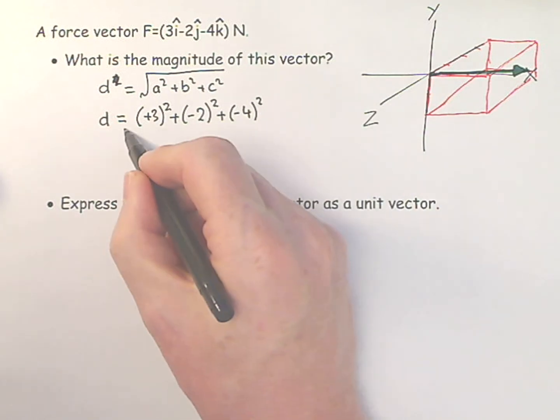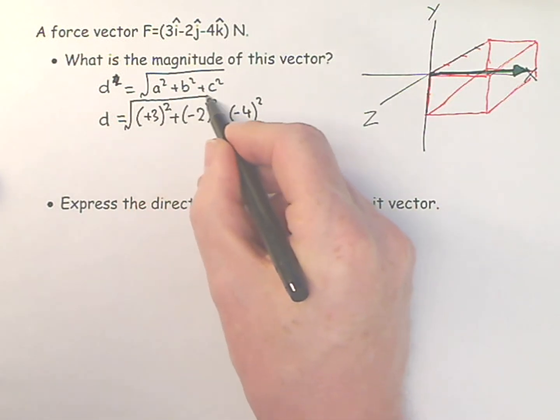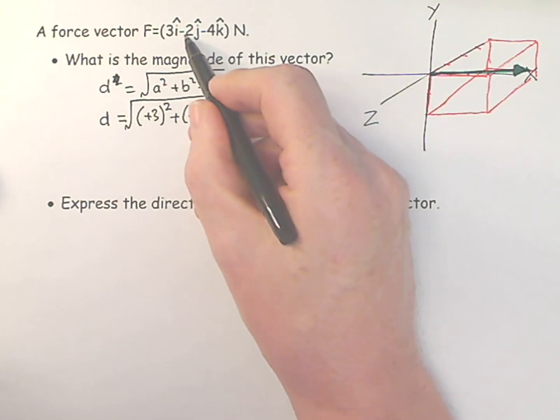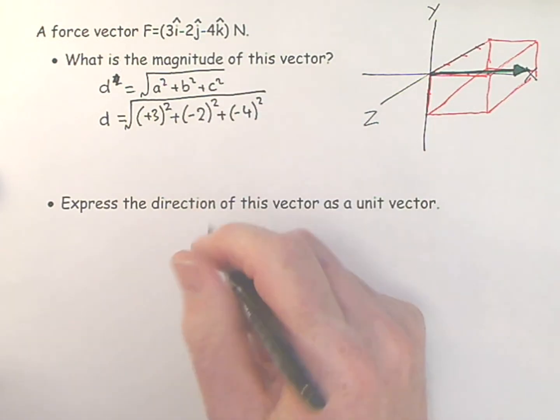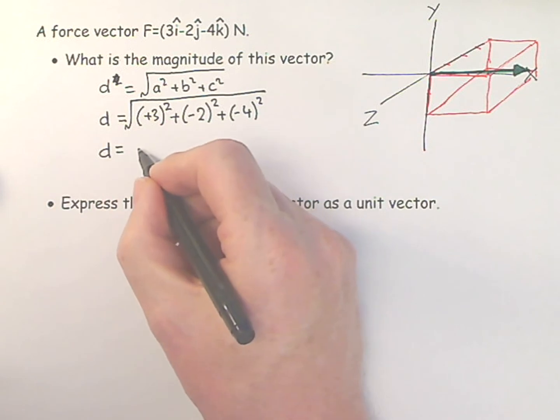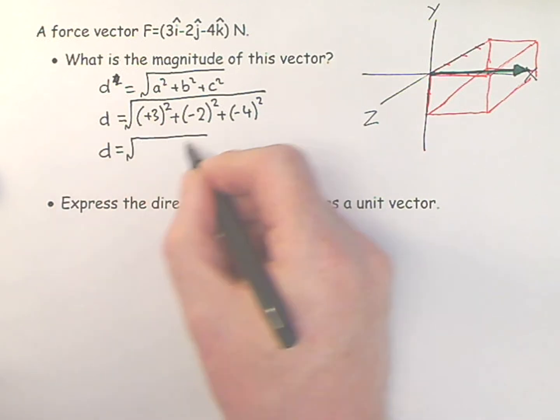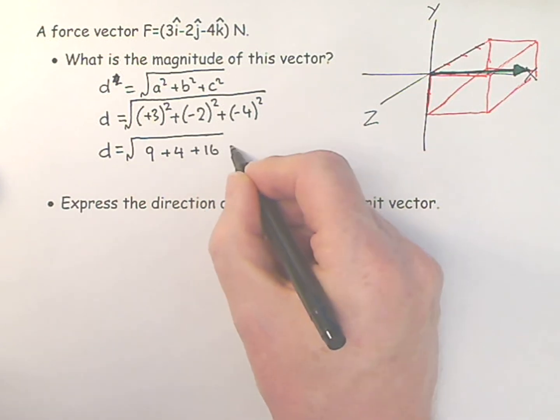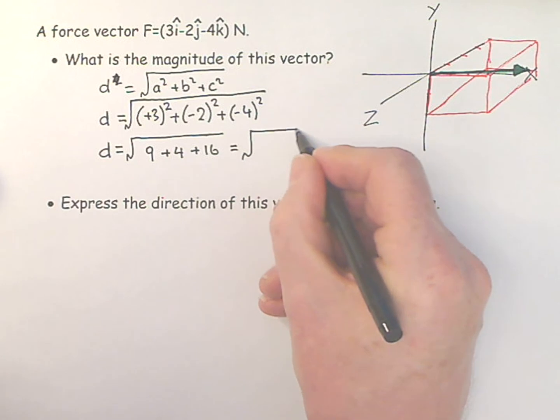I like to put my numbers in parentheses so that that sign is a direction. I don't mistake it with a subtraction. So then d is equal to the square root of 3, 3's are 9, 2, 2's are 4, 4, 4's are 16. So that's going to equal the square root of 29.